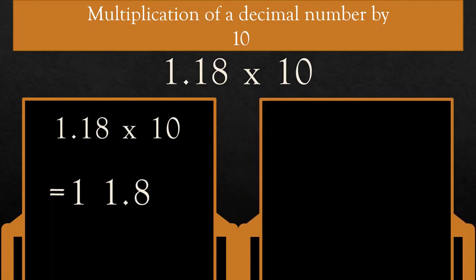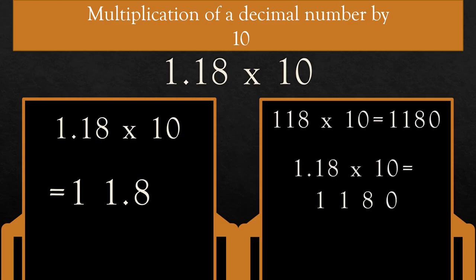Another way: multiply 1.18 × 10, ignoring the decimal point. Everyone knows 118 × 10 is equal to 1180. Then, how many digits after the decimal in 1.18? Yes, 2. So count 2 digits from the right — 1, 2 — and place the decimal in the product. So the answer is 11.80, that is 11.8.